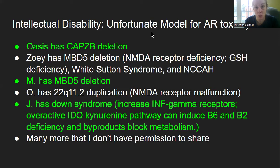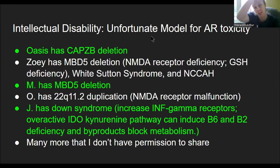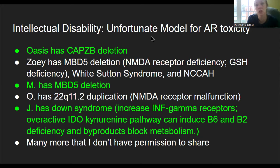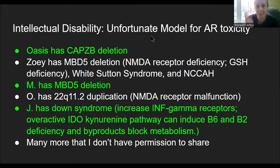People with intellectual disability are the unfortunate model for anhydroretinol toxicity because they have broken pathways. They're more vulnerable at an early age, whereas the rest of us start to have more issues as we get older, because the accumulation of reactive oxygen species over time makes us more vulnerable in general. Some of us also have genetic SNPs — polymorphisms in specific genes. Oasis has a CAPCB deletion, so his F-actin is vulnerable.